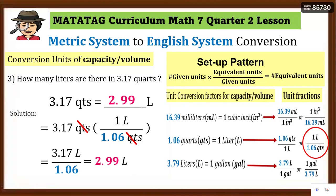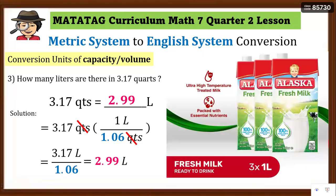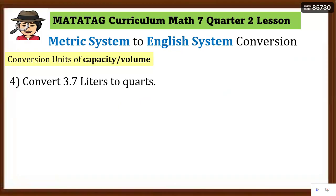So 2.99 liters is equivalent to 3.17 quarts. When rounded up, 2.99 liters approximates to 3 liters. In real life, if your parent buys you Alaska fresh milk, the capacity of one carton is 1 liter, so 3.17 quarts is equivalent to about 3 liters of Alaska fresh milk.